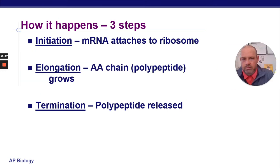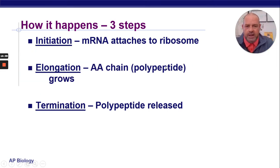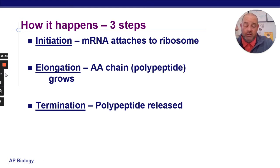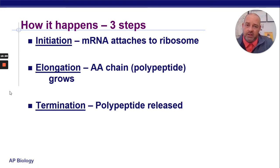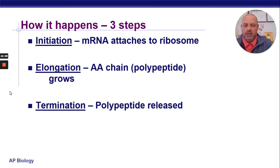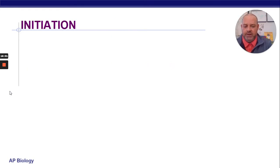Getting into translation and how the nuts and bolts work — we have the same three steps from replication and transcription: initiation, elongation, and termination. During initiation the mRNA attaches to the ribosome. During elongation the polypeptide chain grows. During termination the polypeptide is released.